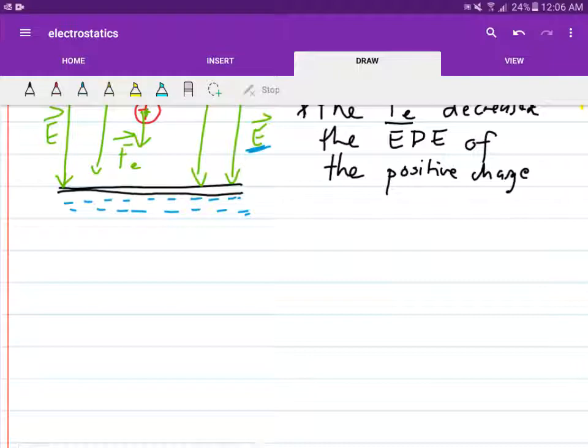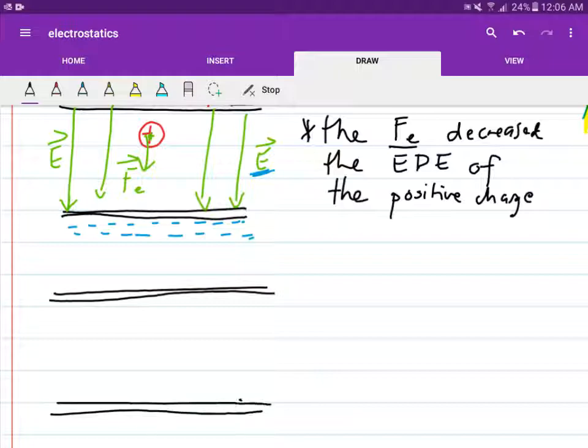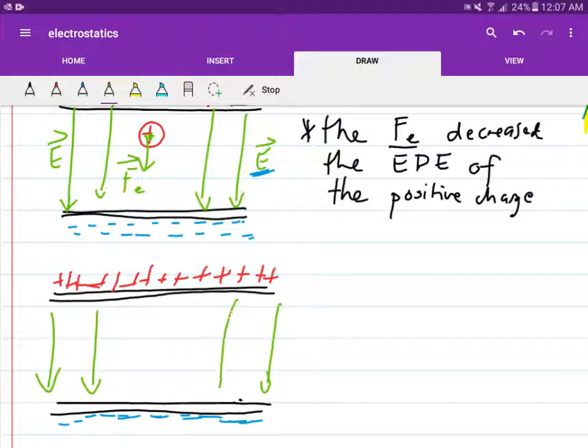Now consider a different scenario. You still have the ceiling here and the floor of negative charges, and here we have positive charges. Our electric field is still pointing from positive to negative. What if, to begin with, our positive charge is in this configuration? The electric force is still acting on it in this direction.